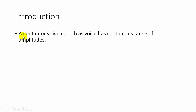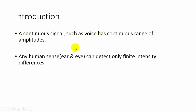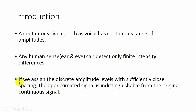Normally a continuous signal such as voice has a continuous range of amplitudes. But our human senses — the ear or eye — can detect only finite intensity differences. So if we assign the discrete amplitude levels with sufficiently close spacing, the approximated signal is indistinguishable from the original continuous signal.